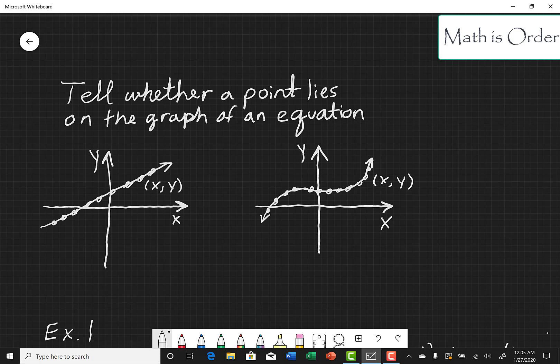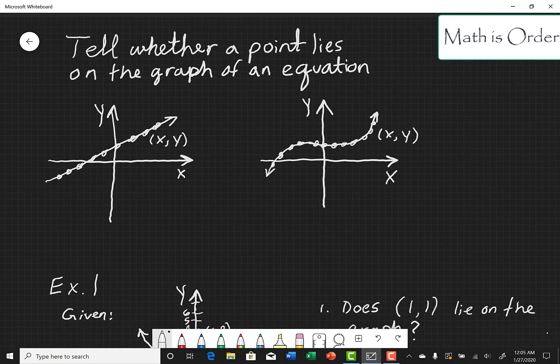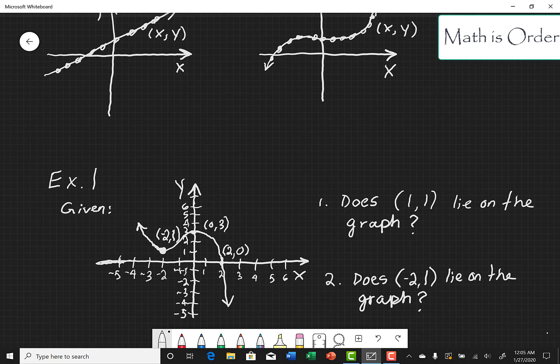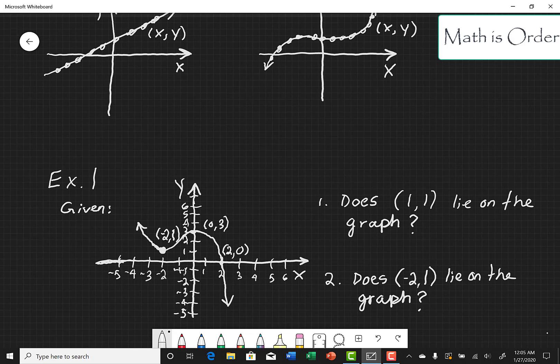So given a graph we can tell whether a given point lies on the graph just by observing. For example, suppose given this graph here where some of the points on the graph are specified and the question may be does a given point lie on the graph?